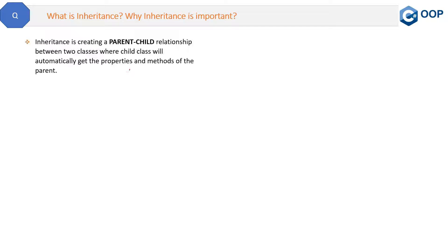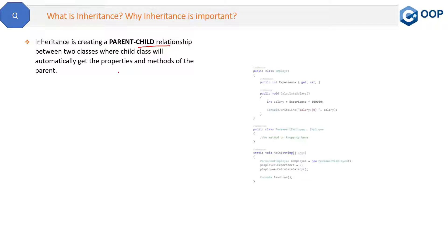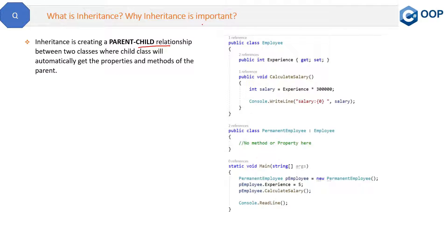Inheritance is creating a parent-child relationship between two classes, where the child class will automatically get the properties and methods of the parent class. Let me show you the same thing in the code. Here we have an Employee class which is a parent class. Remember: base class, parent class, and super class are all the same thing — do not get confused by their names.